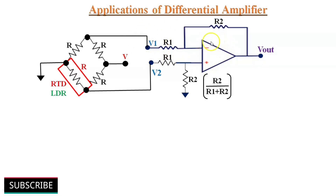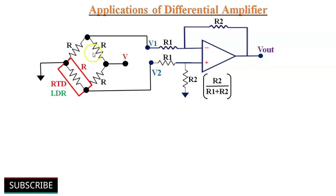Now we will discuss some applications of the differential amplifier. A differential amplifier circuit is very useful since it can be configured to either add or subtract input voltages by suitably adding more resistors in parallel with the input resistors. One of the most common ways is to connect a resistive bridge, commonly called a Wheatstone bridge, to the input of the amplifier. The differential amplifier circuit then becomes a differential voltage comparator by comparing input voltages, with one input connected to a fixed reference voltage and all resistors of equal value.